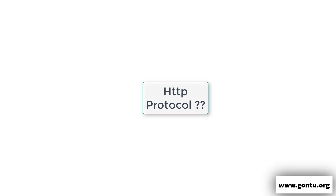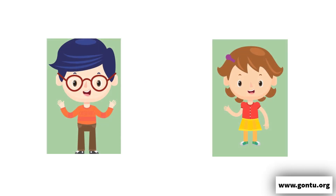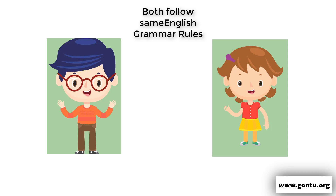Now that we've understood what Tomcat Apache server is about, let's turn to HTTP protocol. In real life, when two persons communicate with each other, they follow a certain common set of rules and regulations for effective communication. For example, if both speak English, they need to follow common English grammar rules. If they don't, their communication may not be effective — what one person says, the other may not fully understand.